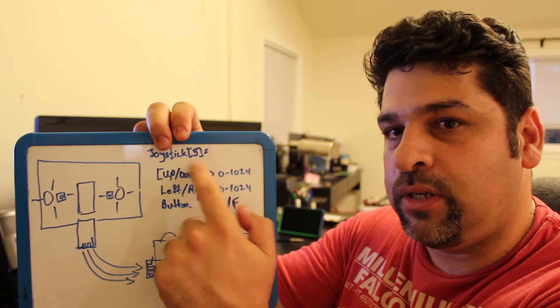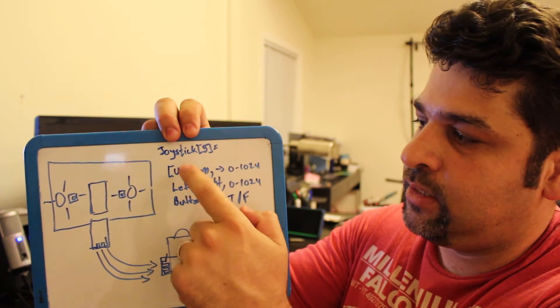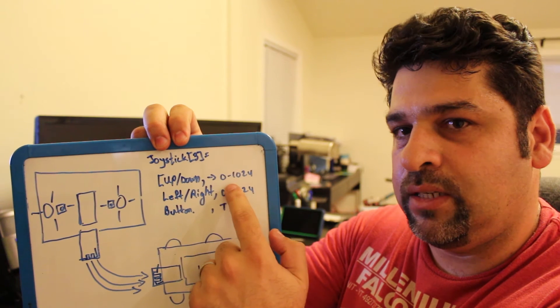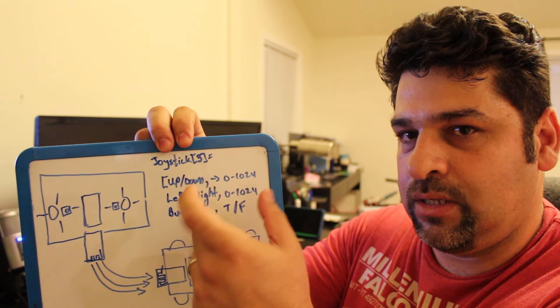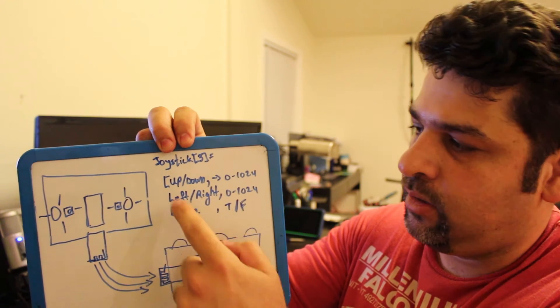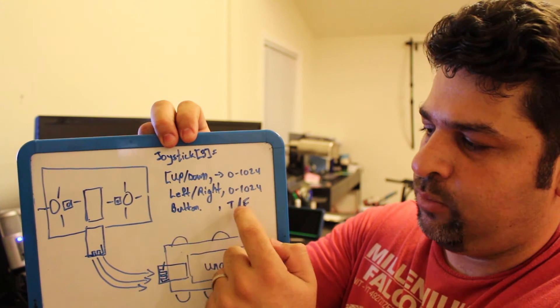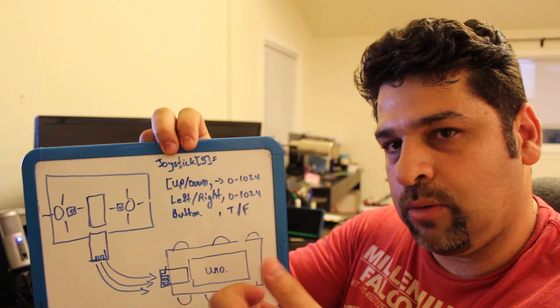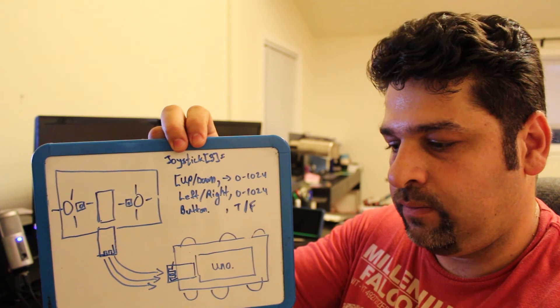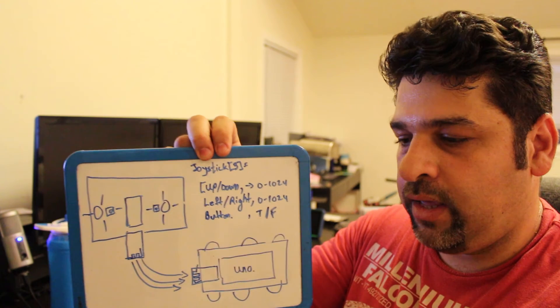So the idea is that each joystick will actually have three spots. The up and down, which will be zero to 1024 because it's just a potentiometer. The left and right, which is also zero to 1024. And then the button, which will be true or false because it's just a push button. So we'll start with designing the control pad and we'll print a case for it and we'll see how it goes. So let's get started.